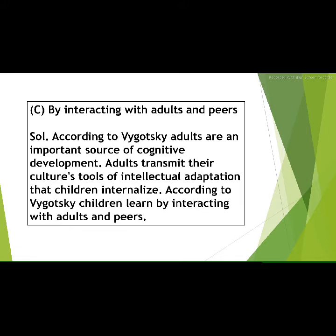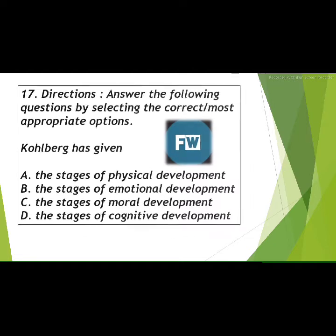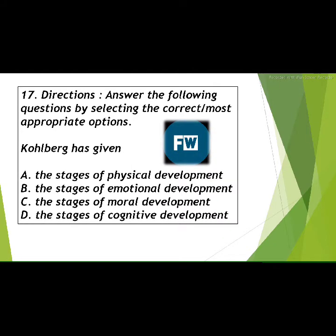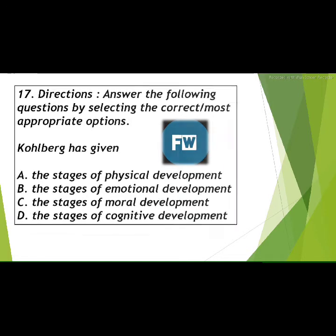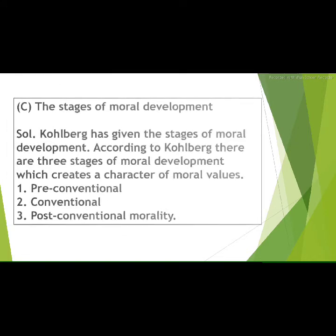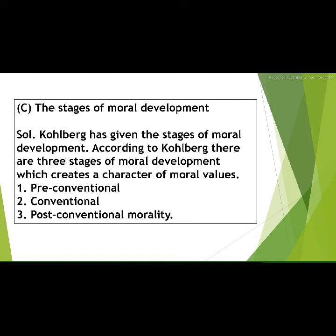Our next question is question number 17: Kohlberg has given — options are: A) the stages of physical development, B) the stages of emotional development, C) the stages of moral development, D) the stages of cognitive development. You have three seconds. The answer is option C: the stages of moral development.